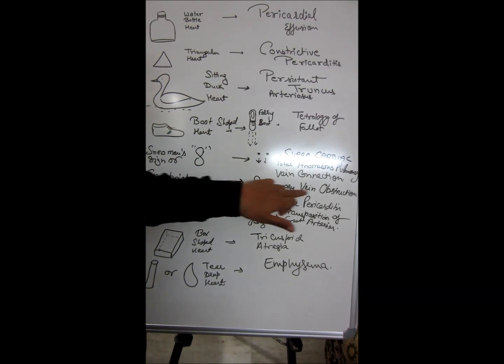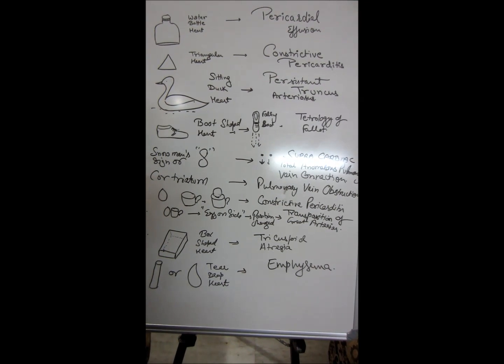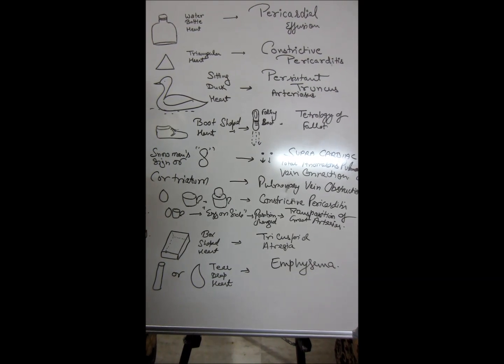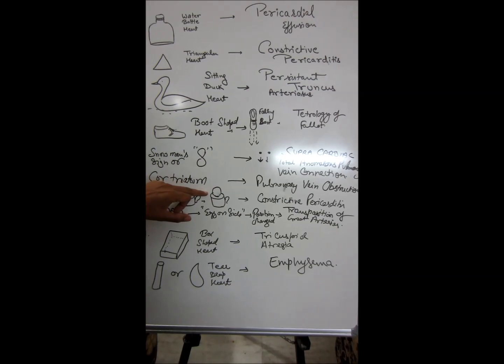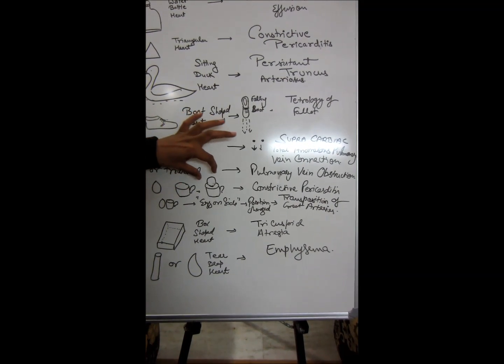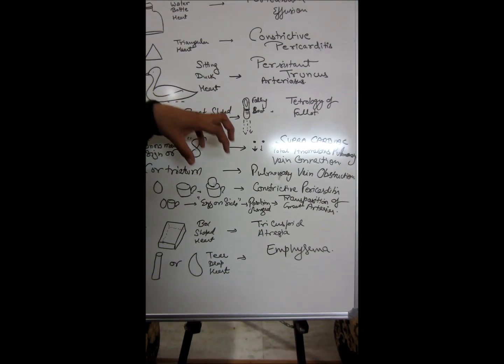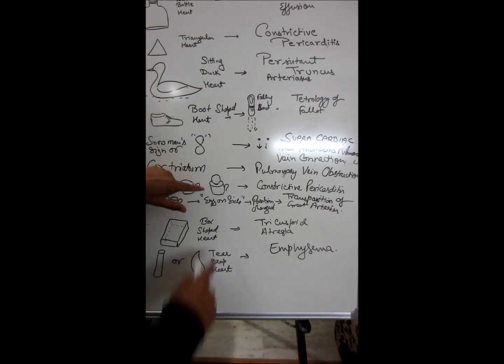Another thing is egg in cup. The egg in cup shape of heart - for example, a cup is holding an egg that is being constricted by the sides of this cup. So another thing is constrictive pericarditis, you can remember it.